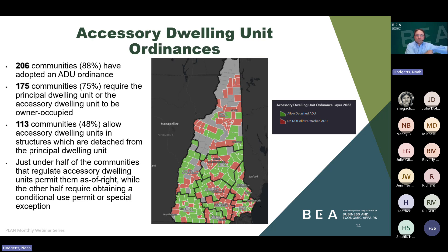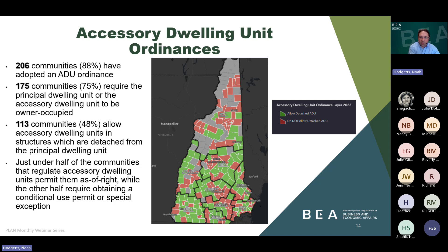Looking at accessory dwelling unit ordinances: since RSA 674:70-73 went into effect on June 1st, 2017, 206 jurisdictions, representing 88% of jurisdictions in the state, have adopted an ADU ordinance in their zoning ordinance — an increase of a couple of additional communities in 2023. The statute requires communities that have adopted a zoning ordinance to allow attached ADUs in single-family residential zoning districts as of right, by special exception, or by conditional use permit. How communities have chosen to comply with this requirement really varies.